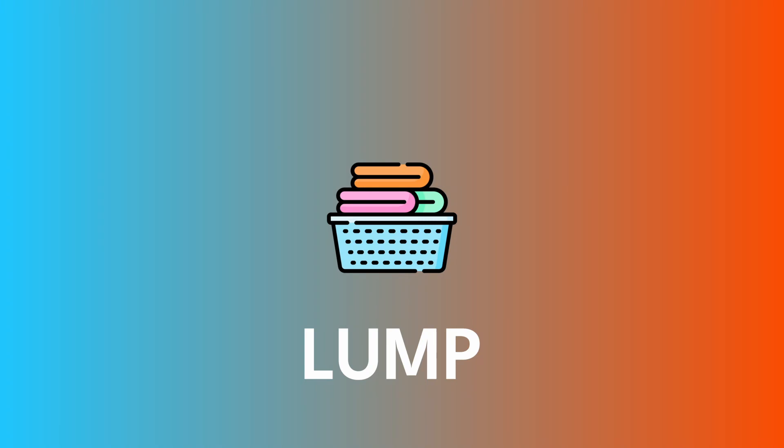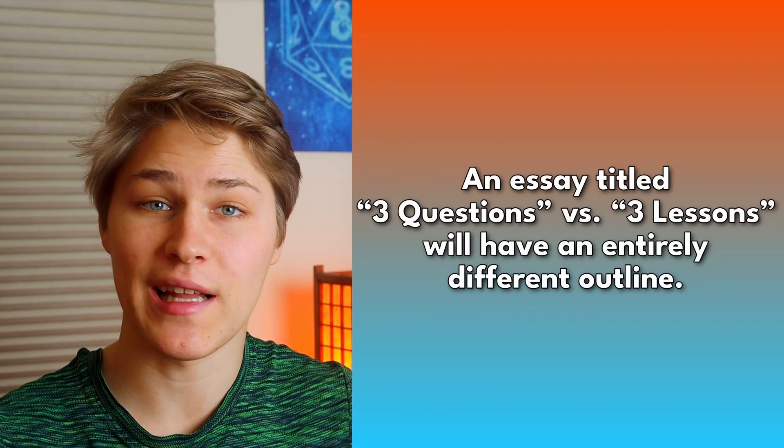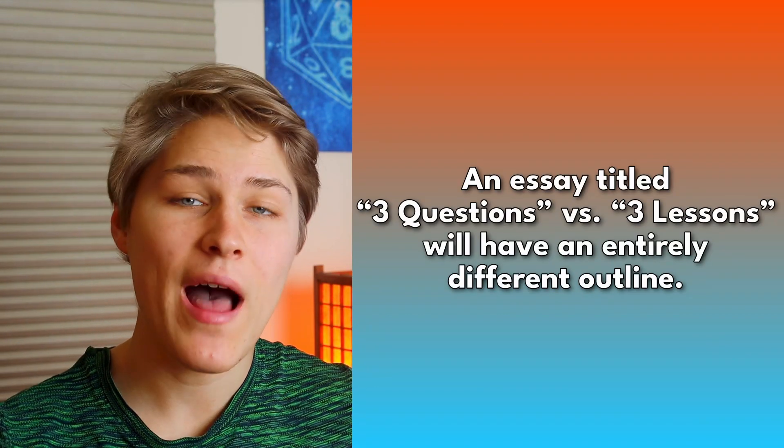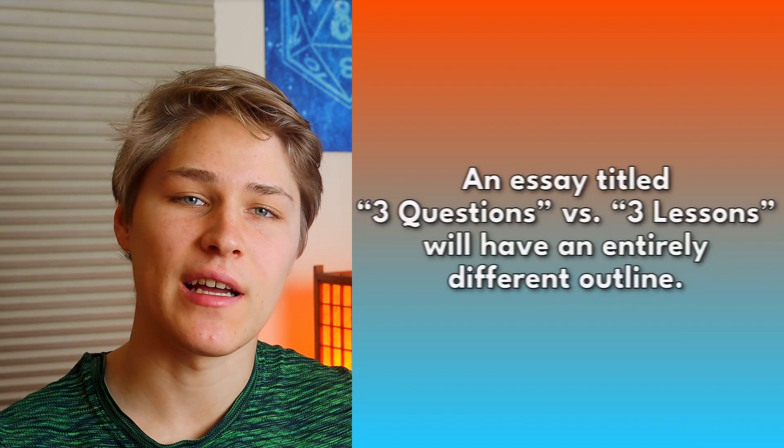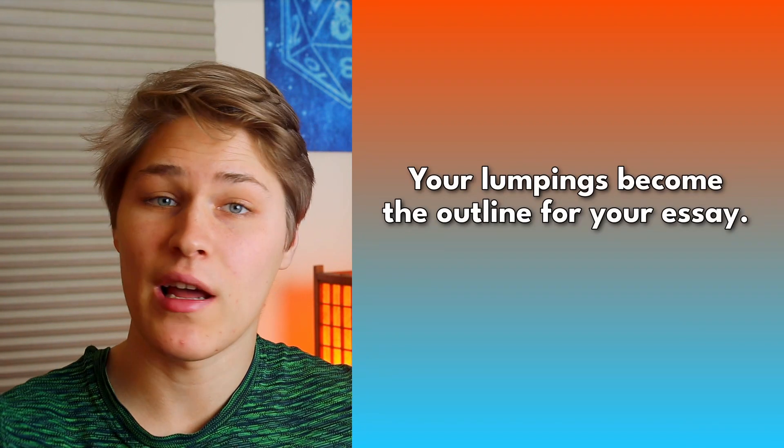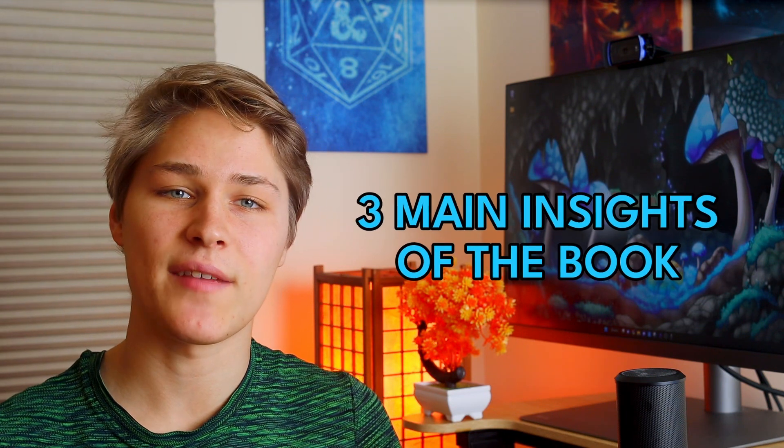Next, lump. In the lump stage, you take all of your dumpings and lump them together based on theme. This is why titling is so important. An essay titled 'Three Questions' versus 'Three Lessons' will have an entirely different outline. Your lumpings become the outline for your essay. In my case, lumping led me to realize I wanted to structure my lessons around the three main insights of the book.